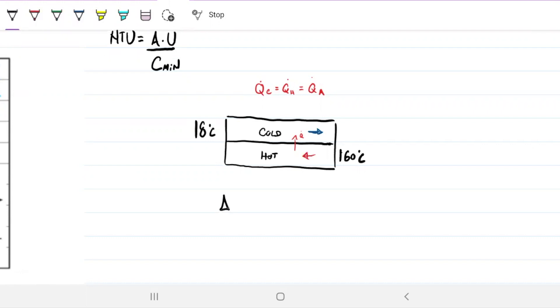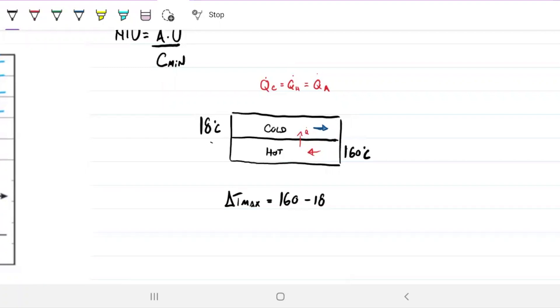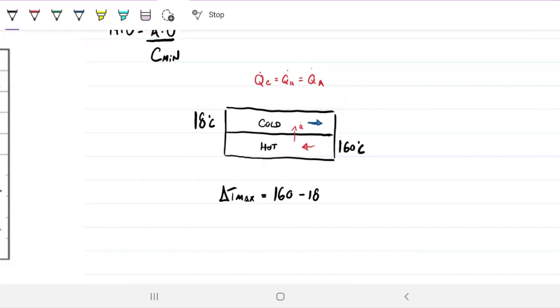Delta T max is 160 minus 18. And there's no possible delta T that's greater than this because the output of the cold is going to be something greater than 18, and the output of the hot is going to be something smaller than 160.